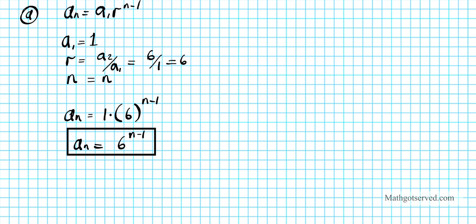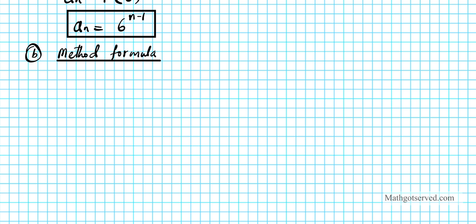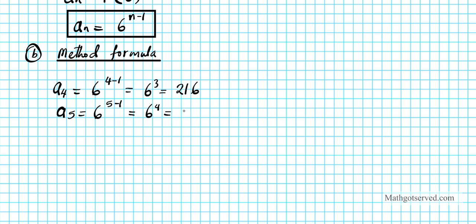For part b, we find the next three terms in two ways. Method one is the formulaic approach. We already have a1, a2, a3 — that's one, six, thirty-six — so we need a4, a5, and a6. A4 equals six to the four minus one, which is six cubed, giving two hundred sixteen. A5 equals six to the fifth minus one, which is six to the fourth, giving one thousand two hundred ninety-six.